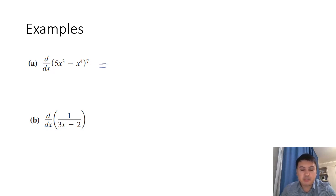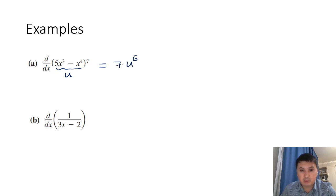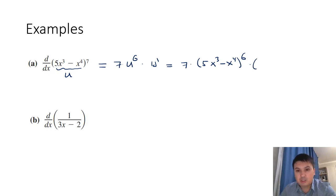Find the derivative of (5x³ − x⁴)⁷. Regard the inside as u, so this is simply 7 · u⁶ · u′ = 7(5x³ − x⁴)⁶ times the derivative of the inside. The derivative of 5x³ − x⁴ is 15x² − 4x³. We can leave the expression in this form.